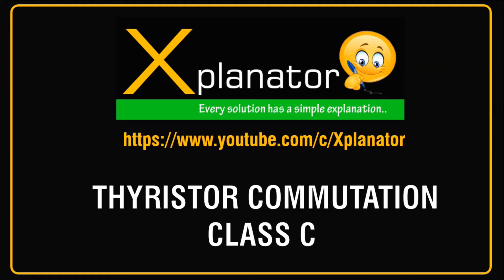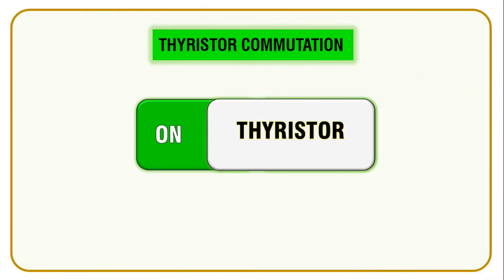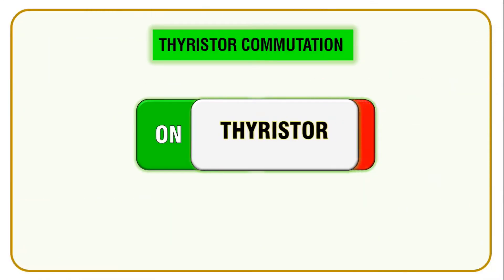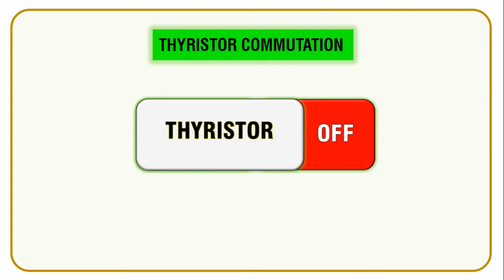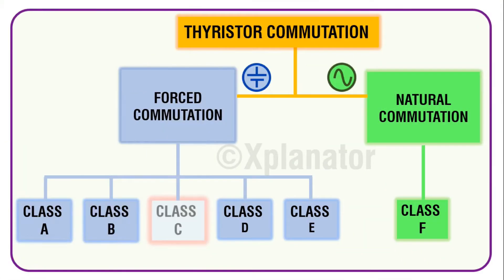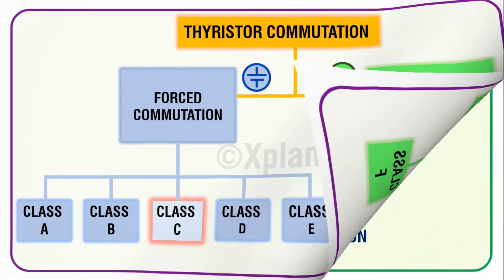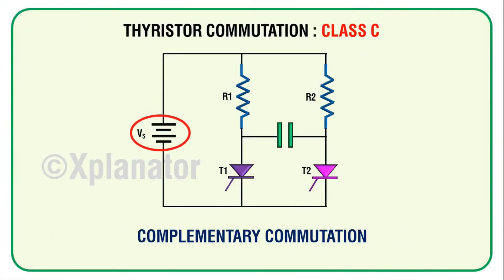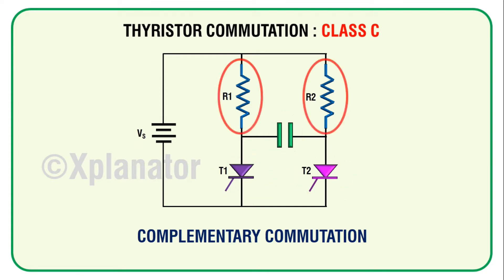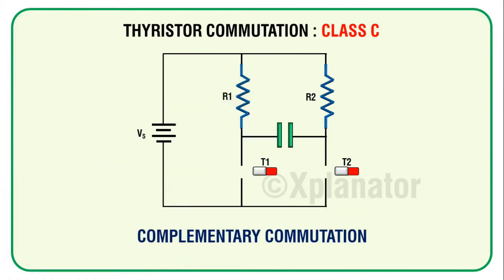Hi guys, today's topic on Explanator is going to be on the working of a class C thyristor commutation circuit. We know that thyristor commutation refers to switching off a working thyristor. Since class C comes under the category of forced commutation, for constructing this circuit we will need a DC supply, two thyristors, a capacitor and loads R1 and R2.